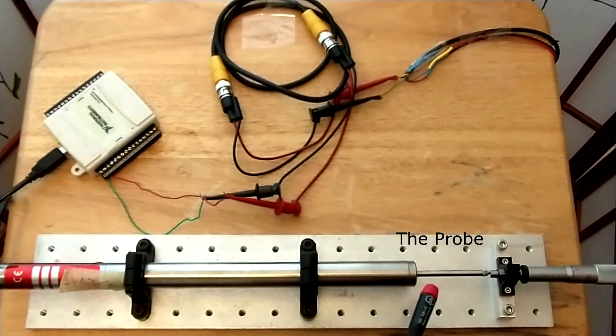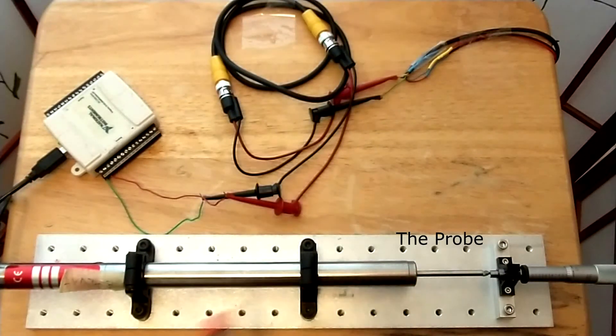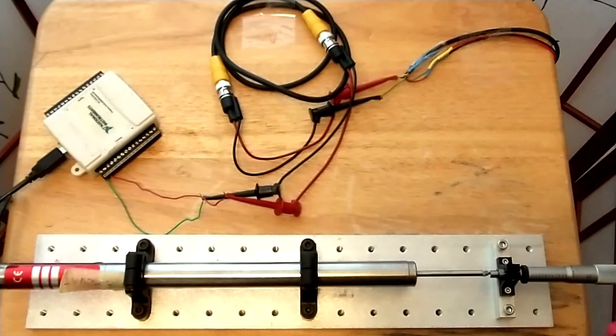Here is the probe, or the plunger, that we're going to be using with the LVDT, and also over here on the right-hand side, we have the micrometer.